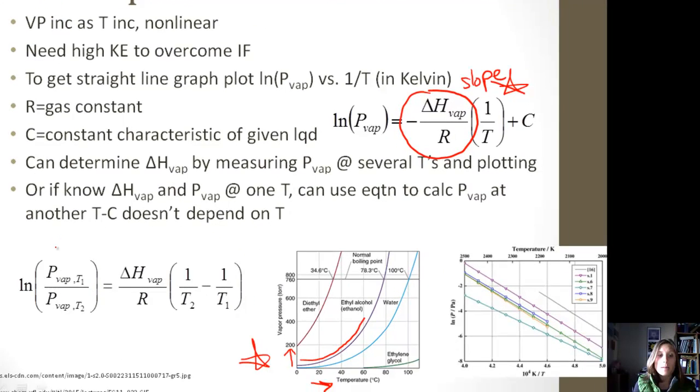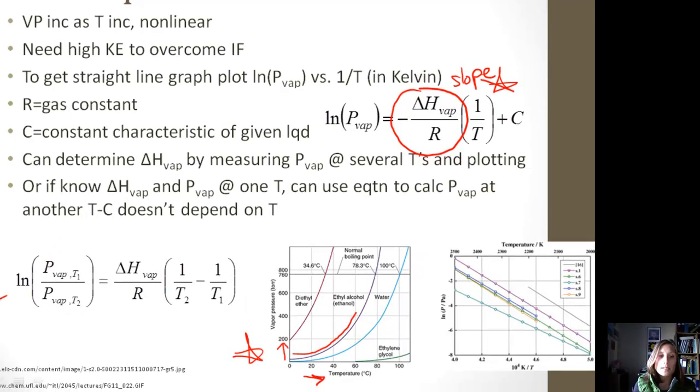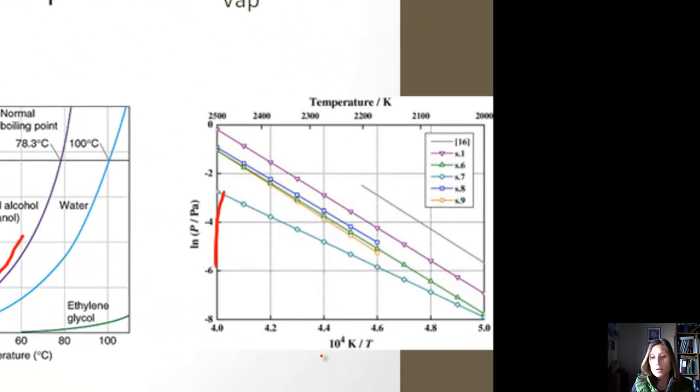We can also put this equation together. This is what we're doing right here. We're knowing the vapor pressure at a specific temperature, and then we can find the new vapor pressure at a separate temperature. And if we plot natural log of pressure versus one over temperature, then we get these straight lines. And the slope is equal to negative delta H of vaporization over R.